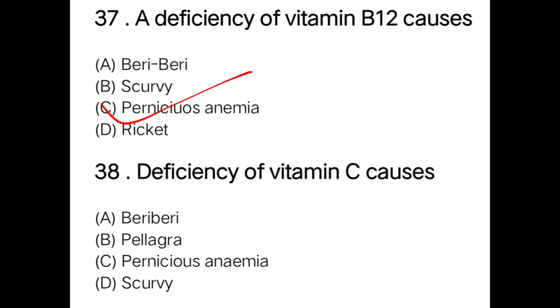Question: Deficiency of vitamin C causes option A beriberi, option B pellagra, option C pyridoxine, option D scurvy. Correct answer is option D: scurvy. Deficiency of vitamin C causes scurvy.